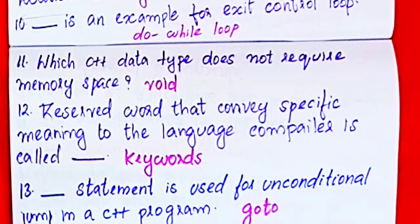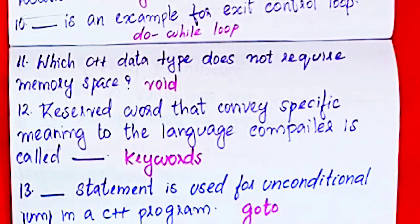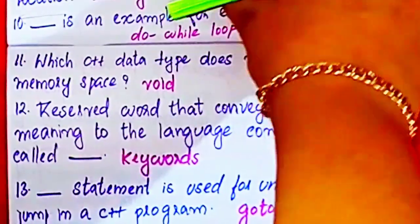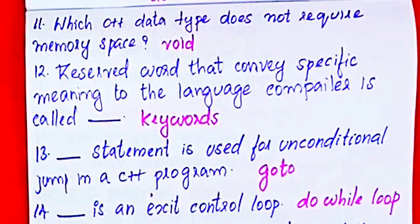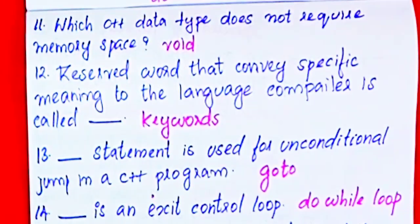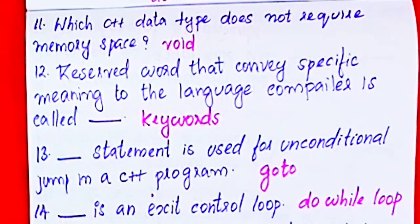The do-while loop is an example of an exit control loop. The null character does not require memory space for itself. Each element is accessed by its index. After that, the data type can be void.